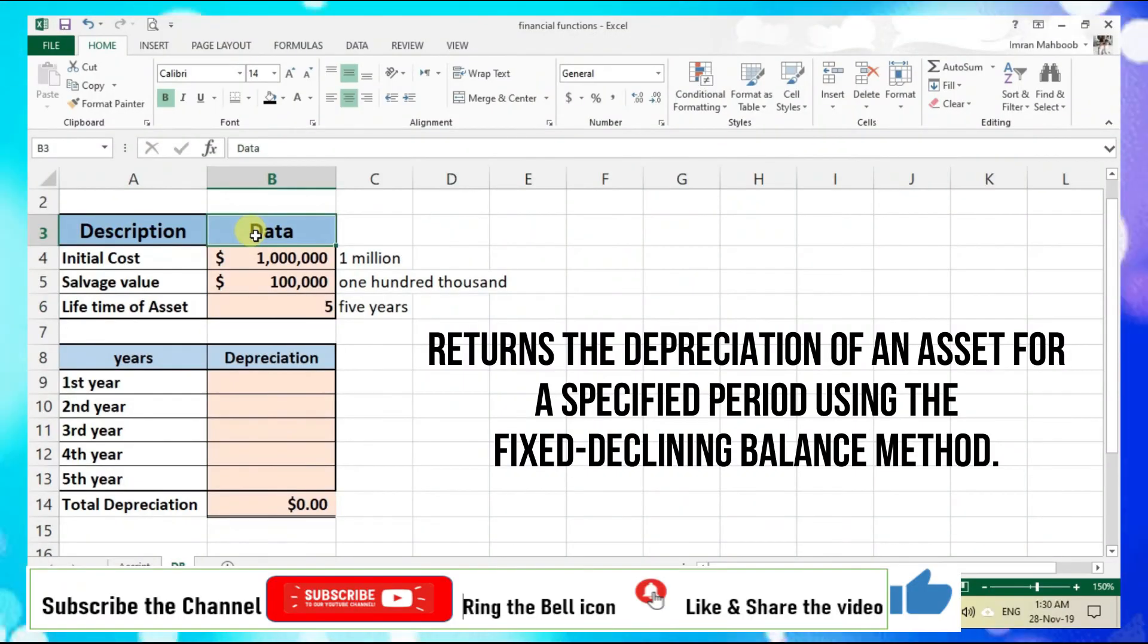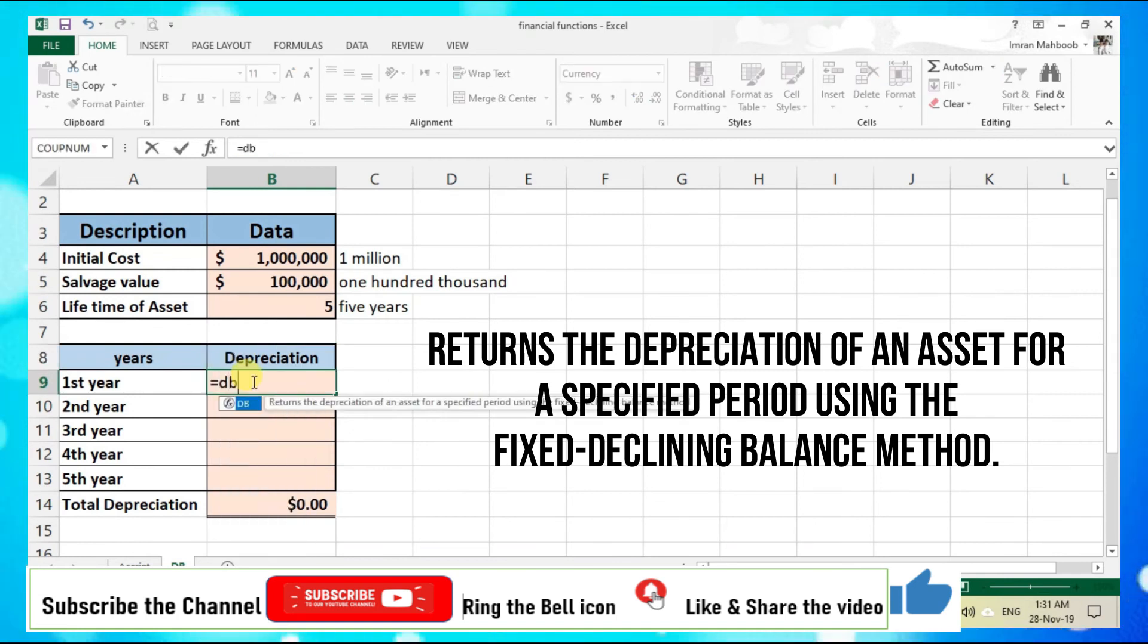Here we have the data which includes initial cost of 1 million dollars, the salvage value is 1 lakh dollars, and the lifetime of asset is 5 years. Now it is required to calculate depreciation for each year by using DB function. Equals DB, open parenthesis, initial cost comma, salvage value comma, lifetime of asset comma.